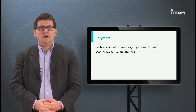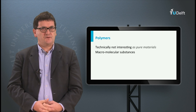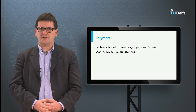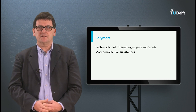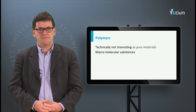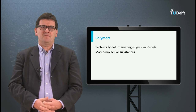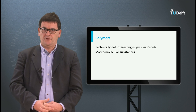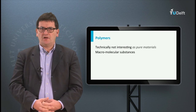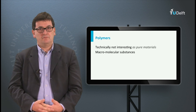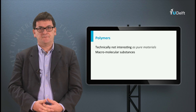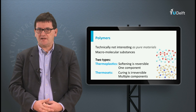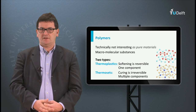Polymers are not very interesting for structural applications. Nevertheless, I would like to discuss them here because they are a very important ingredient of composites. Most polymers are man-made materials, synthesized from refinery products or crude oil. Those monomers are processed to become macromolecular substances. There are two types of polymers of interest: thermoplastic and thermoset polymers.